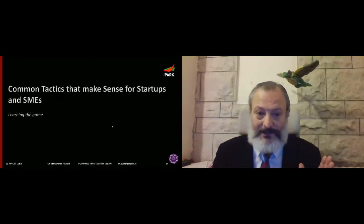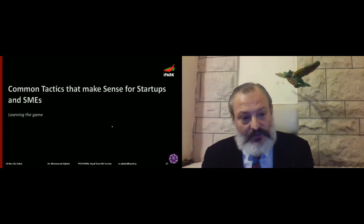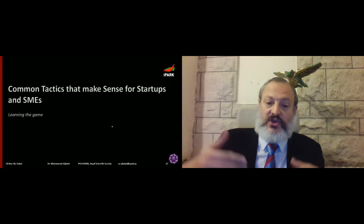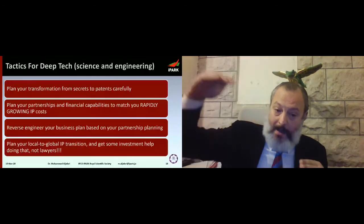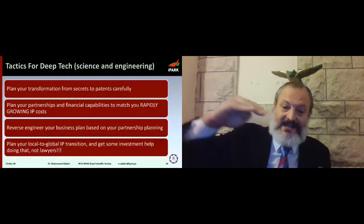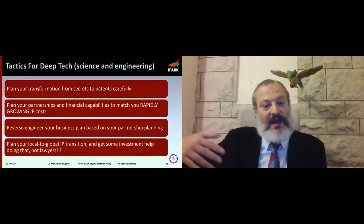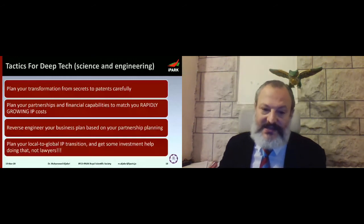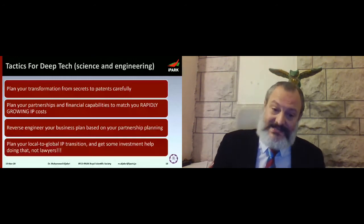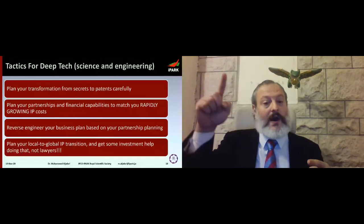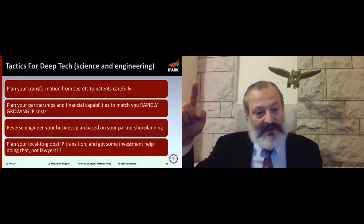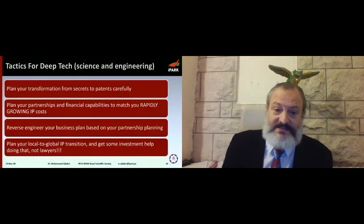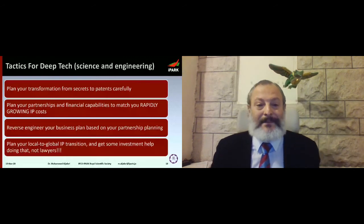You also have to plan your partnerships and financial capabilities so that your patent costs go up and your partnership strength goes up together. That means when you have to pay $100,000 for five lawyers to file patents in seven countries, you have the money — or your partner has the money. The costs will go up and your partnerships have to go up in line.